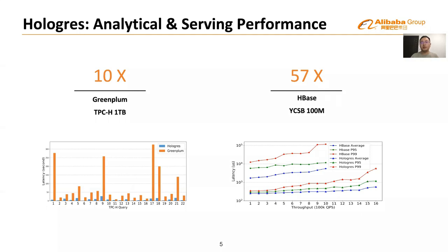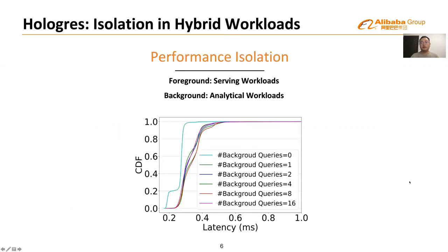We also compared Hologres with specialized systems for analytical processing and serving respectively. For analytical processing, the latency performance of Hologres is 10 times better than Greenplum. For serving workloads, Hologres is 57 times faster than HBase. Hologres also guarantees resource isolation, which helps fulfill the different SLOs of serving queries. Even with a large number of concurrent analytical queries executing in the background, Hologres can still achieve steady and low latency for serving queries.